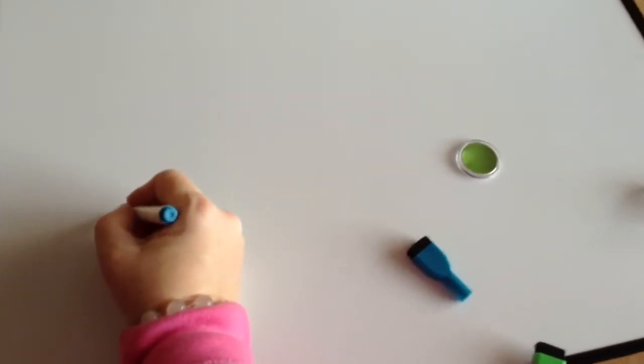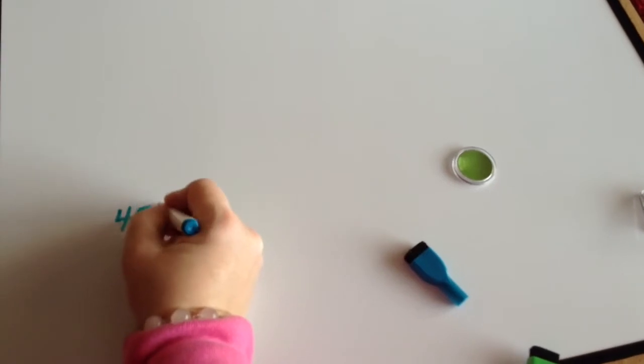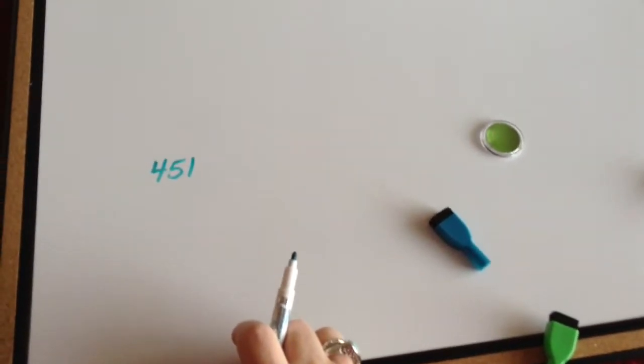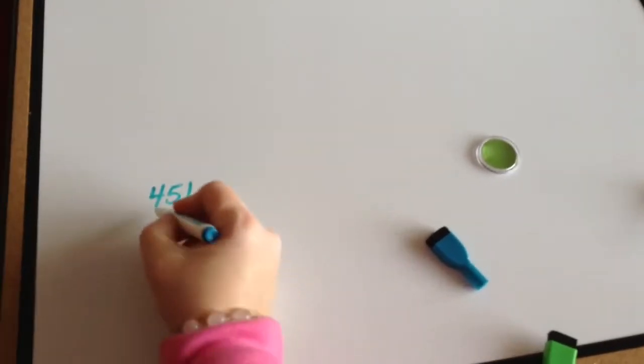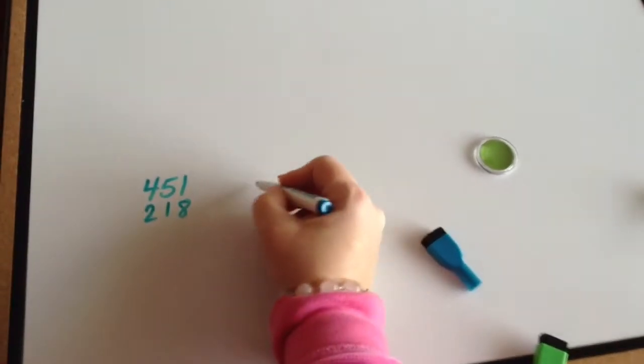Hello, today we're going to be regrouping in the ones place, both by adding and subtracting. Say that we have 451 marbles and some of them are small, and we know that there's 218 of them that are small.